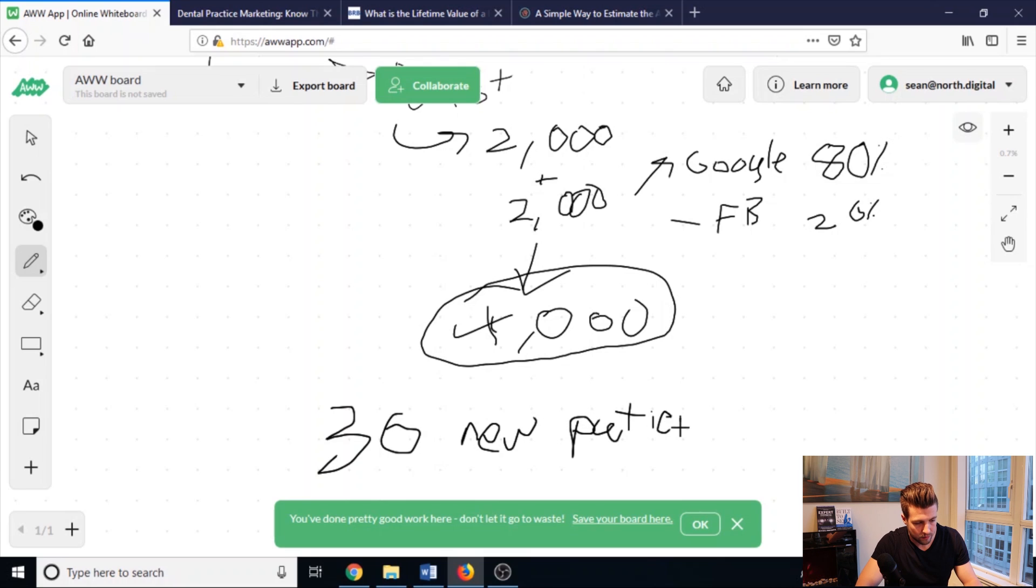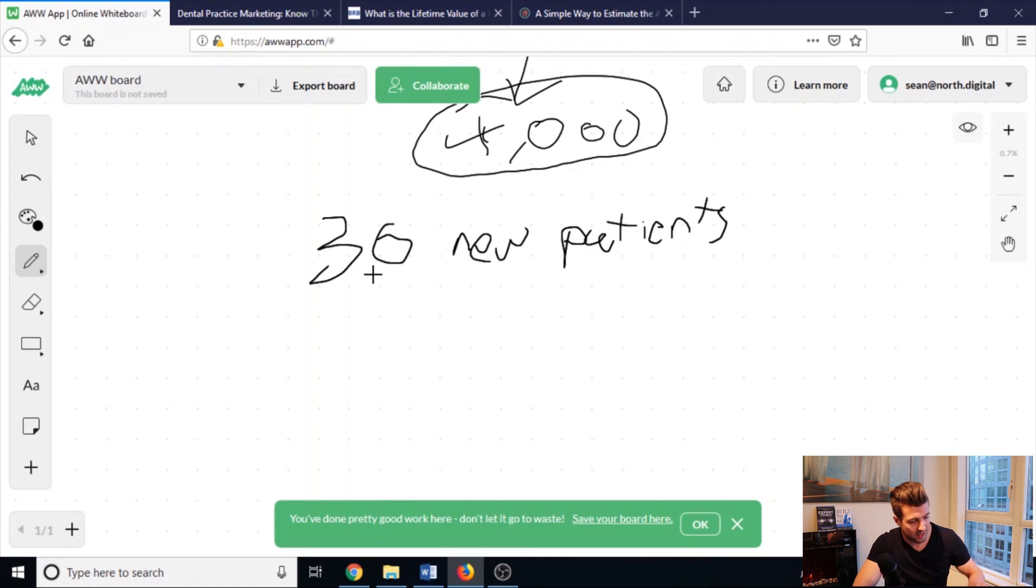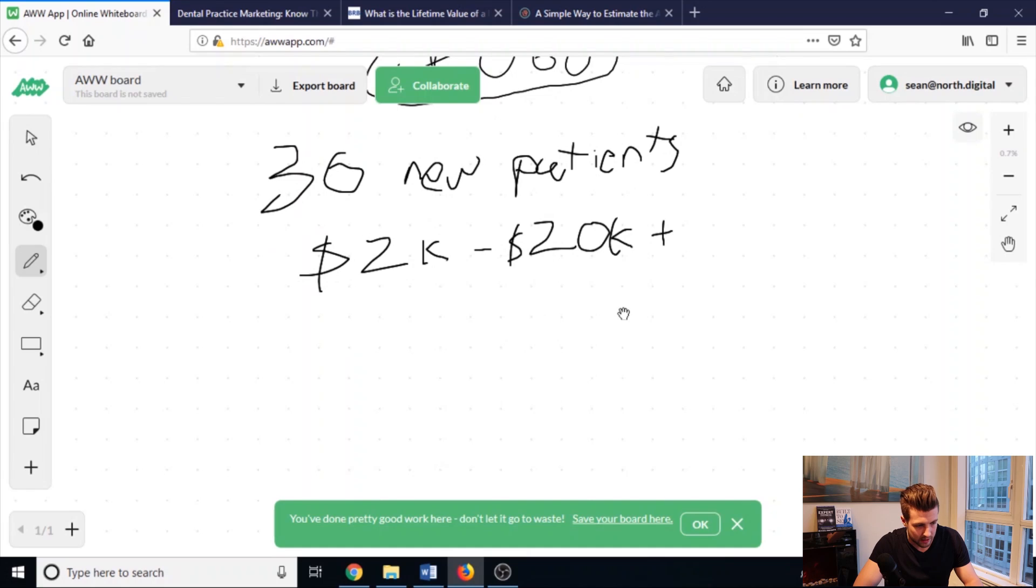Now, I'm going to show you why our dentists are happy to pay us $2,000 a month to manage the campaign, and they're happy to pay $2,000 a month to Google and Facebook for a total of $4,000 out of their pocket. Because the lifetime value of a new patient for a dentist is, depending on where you look, I've seen it quoted from anywhere from $2,000 to $20,000 plus.